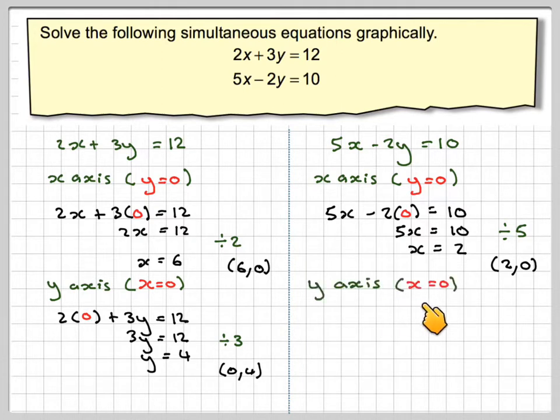For the y-axis, x equals 0. We get 5 times 0 minus 2y equals 10. We need to be careful here, because 5 times 0 is 0, but we've still got a minus 2y. Don't forget the minus sign here.